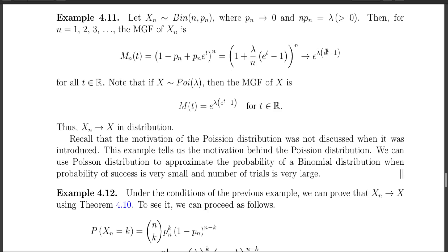What we have to do is identify the distribution corresponding to this moment generating function. It is easy to identify because we have seen earlier that if X follows a Poisson distribution, then X has this moment generating function. So the MGF of Xn, which has a Binomial(n, pn) distribution, converges to the MGF of X which has a Poisson(λ) distribution. That means Xn converges to X in distribution.